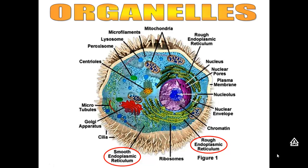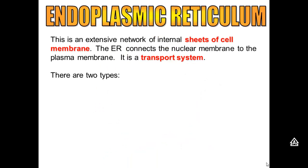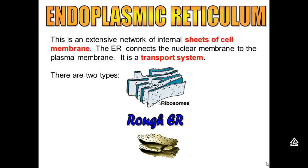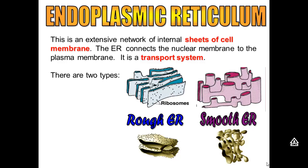Welcome to part 2 of our discussion on cell organelles. Today we're going to start talking about the smooth endoplasmic reticulum and the rough endoplasmic reticulum. ER or endoplasmic reticulum is basically just sheets and sheets of cell membranes, and the main job of both of these types of ER is that it's a transport system. The rough ER helps to transport proteins and the smooth ER helps to transport hormones and fats.